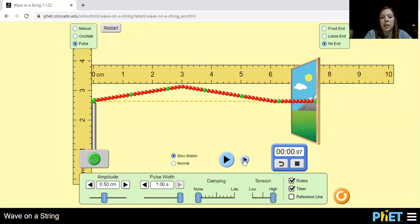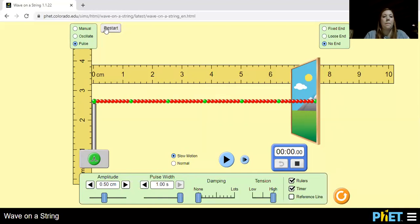Last but not least, we're going to test the effect of tension on time. So for tension, we're going to have amplitude at 50, pulse width at 50. And we're going to have tension start off at low. So everything's good. So we're going to send a pulse through.